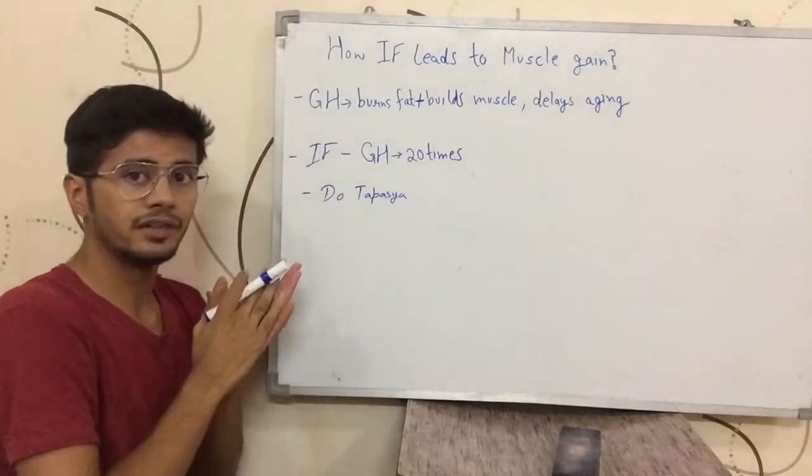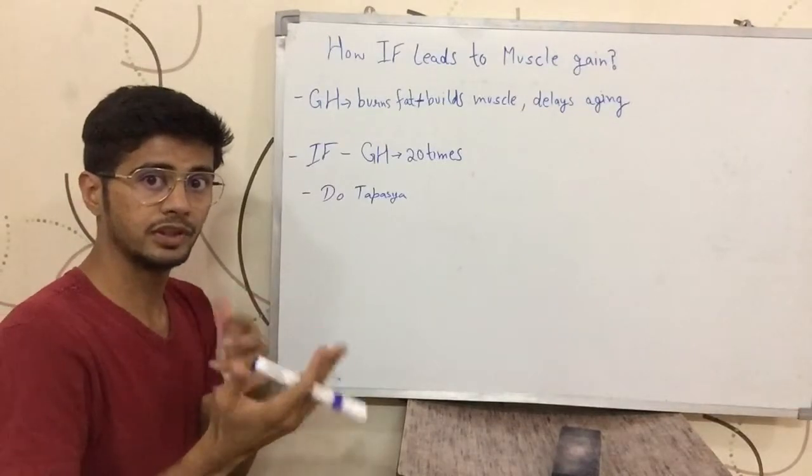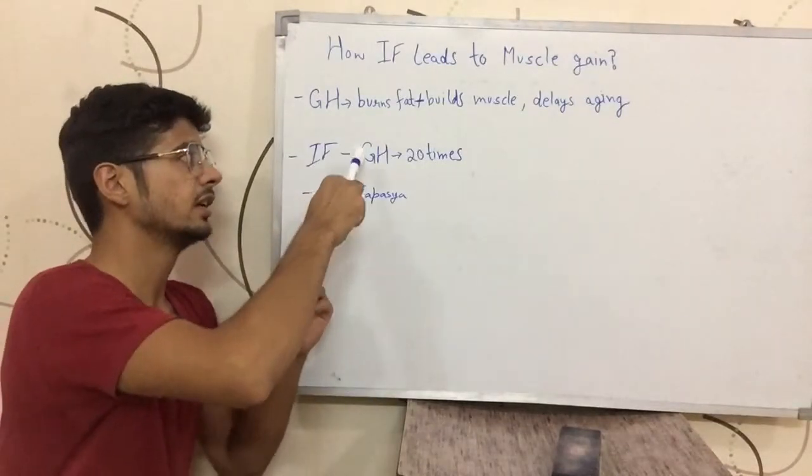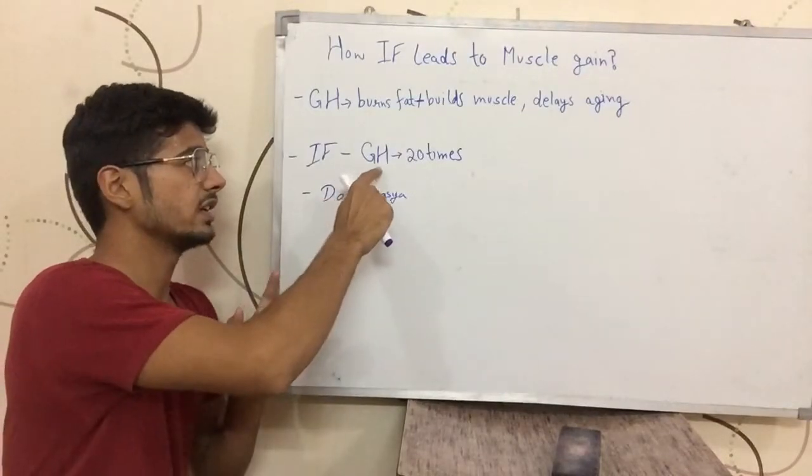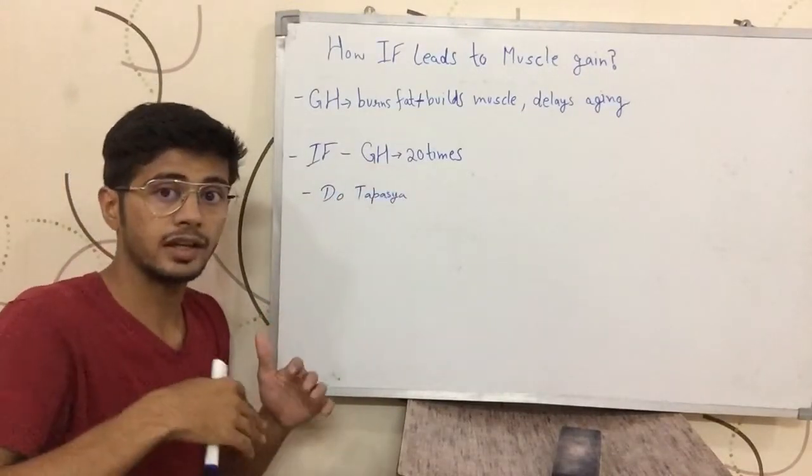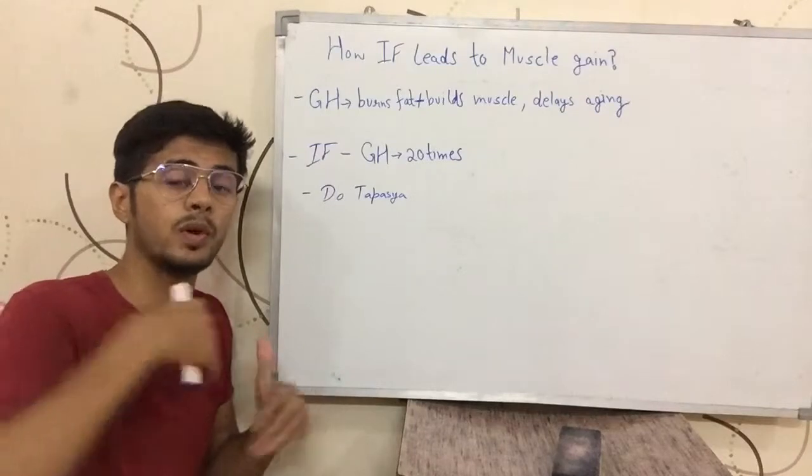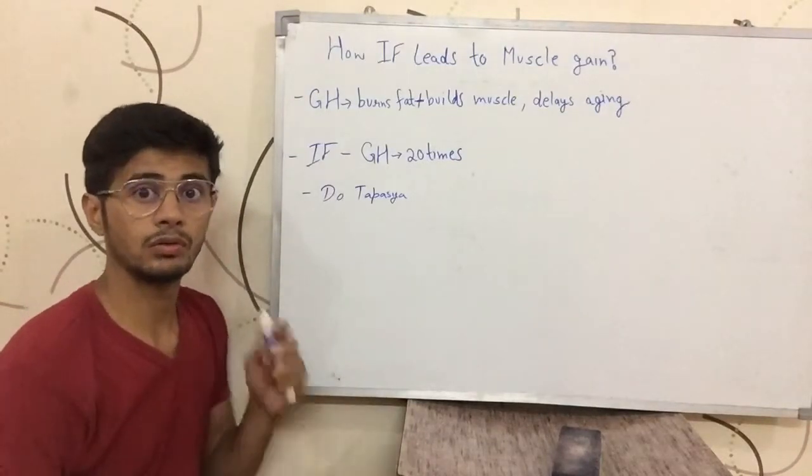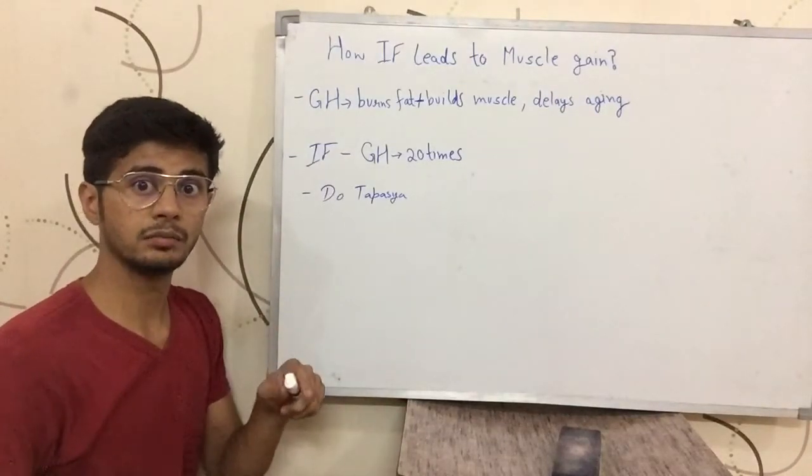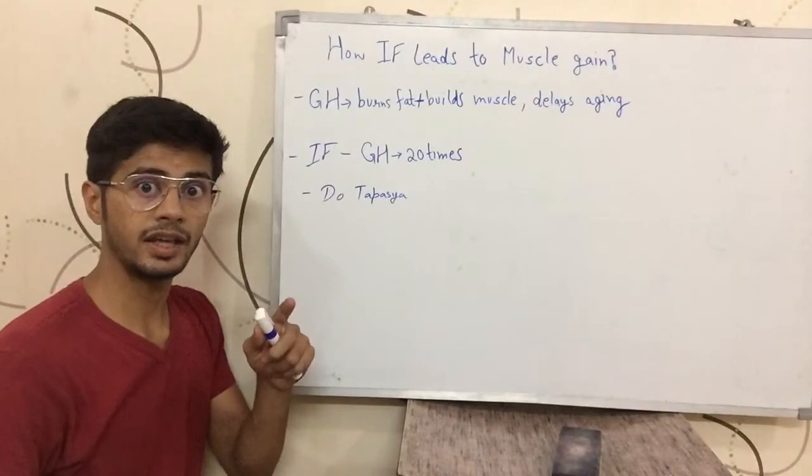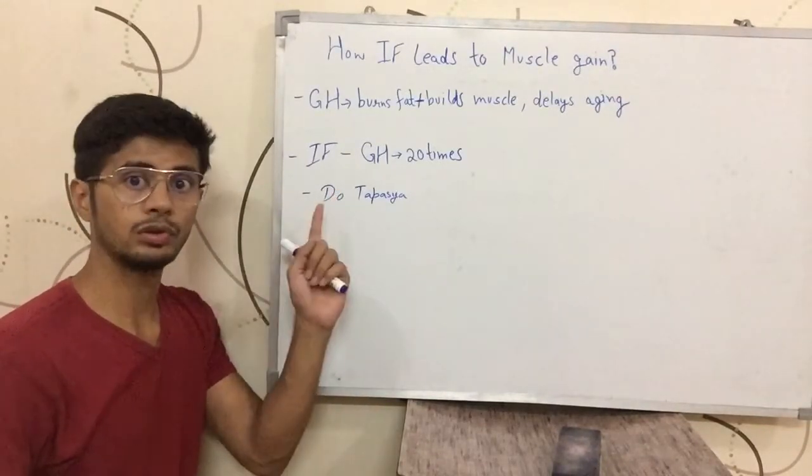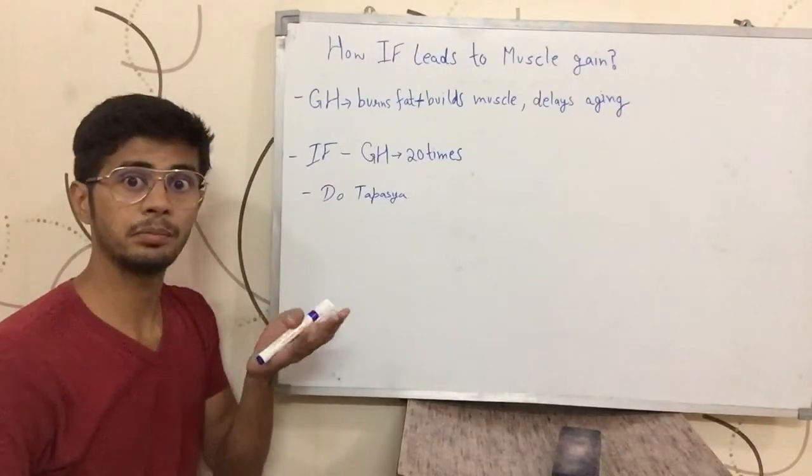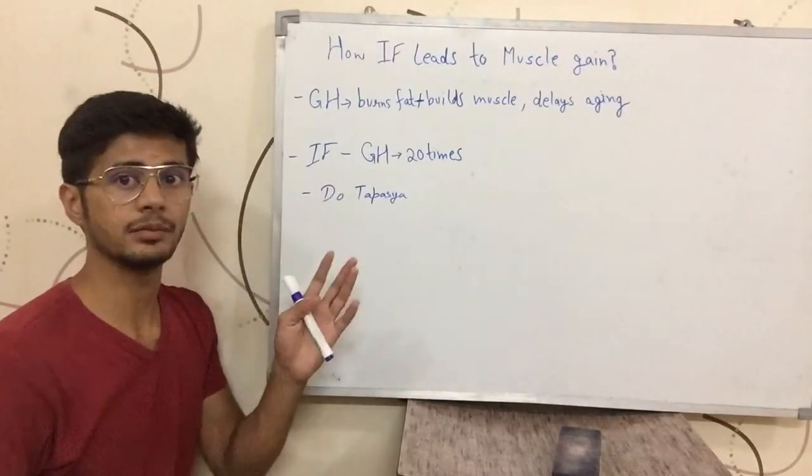Now, how does intermittent fasting help with this? Intermittent fasting increases growth hormone. And it has been found that intermittent fasting can increase growth hormone up to 20 times. Growth hormone burns fat and builds muscle. Helps you gain muscle at the same time. And growth hormone shoots up up to 20 times by intermittent fasting.